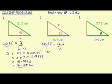x times cosine 35 degrees is equal to 14.5.